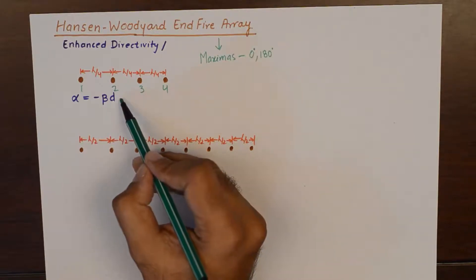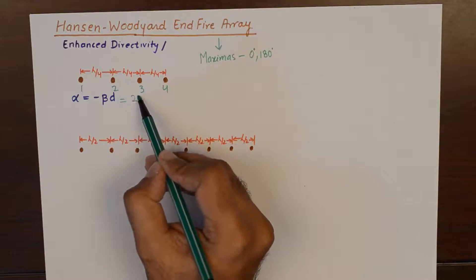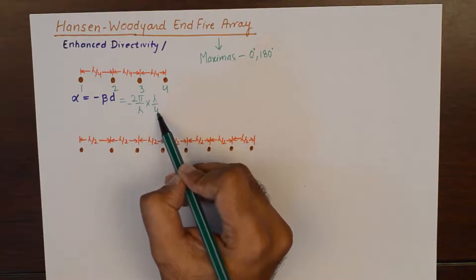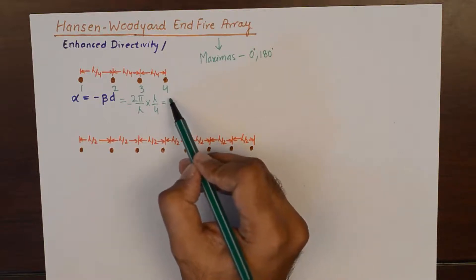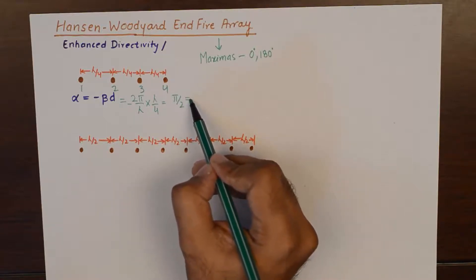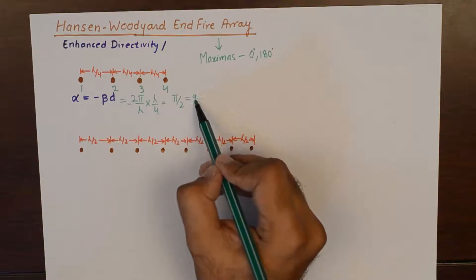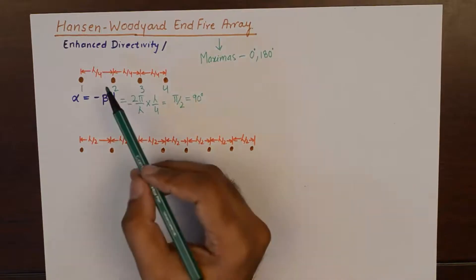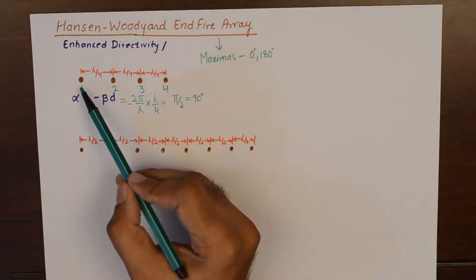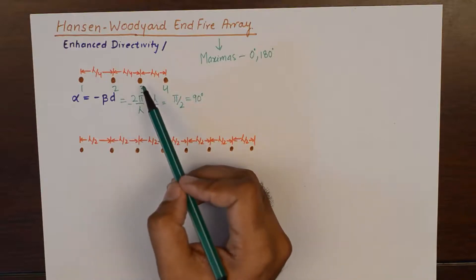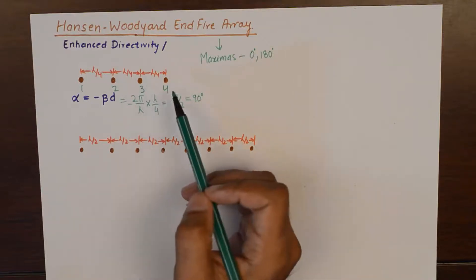And that should give us 2 pi by lambda into our distance lambda by 4. So, it gives me pi by 2 which is equivalent to 90 degrees phase shift between the progressive elements. So, in other words, going from 1 to 2 there is a phase shift of 90 degrees in the signal. From 2 to 3 there is going to be an additional phase shift of 90 degrees and so on.